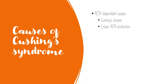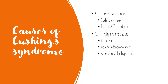Then we have ACTH-independent causes. First on this list is obviously steroids — this is an iatrogenic cause, so it's induced by doctors, and it's actually the most common cause of Cushing's. Then we have adrenal adenomas. Rather than being a disease of the pituitary which affects the ACTH release, this is an intrinsic disease of the adrenal gland and isn't anything to do with ACTH — no matter how much ACTH you give, it's always releasing cortisol. Similarly, there's also adrenal nodular hyperplasia, and you also have rarer syndromes as well listed here.